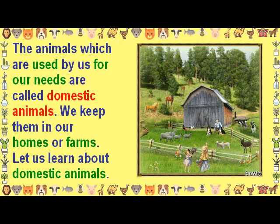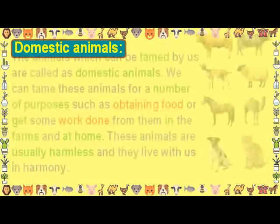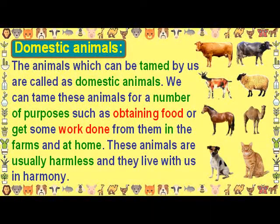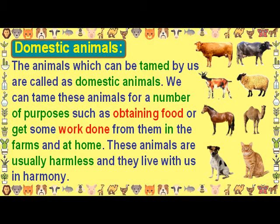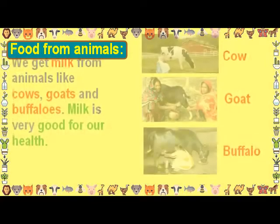The animals which are used by us for our needs are called domestic animals. We keep them in our homes or farms. The animals which can be tamed by us are called domestic animals. We can tame these animals for a number of purposes, such as obtaining food or getting some work done from them in the farms and at home. These animals are usually harmless and they live with us in harmony.